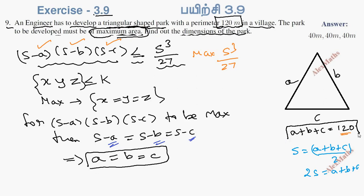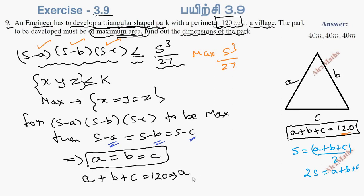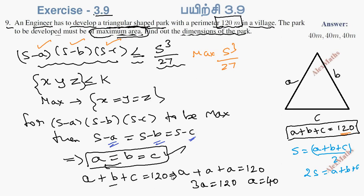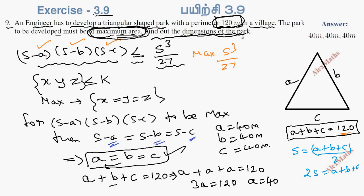Starting with perimeter 120: a plus b plus c equals 120. Since a equals b equals c, we get 3a equals 120, so a equals 40. If the maximum area condition holds, the three values are equal — this is an equilateral triangle. The three sides are 40, 40, 40 meters. This gives the maximum area.